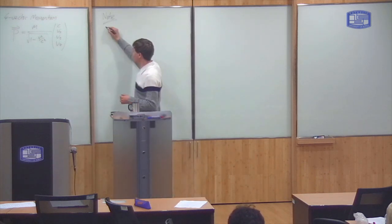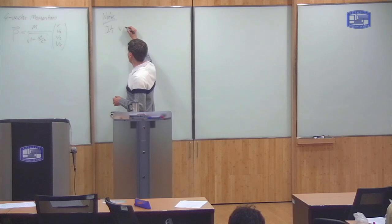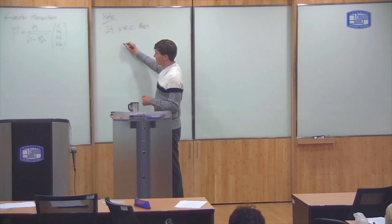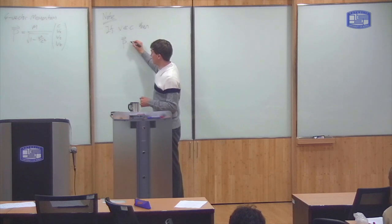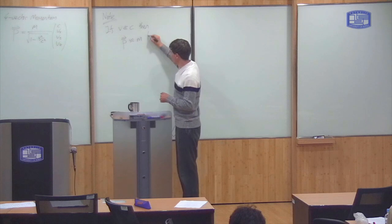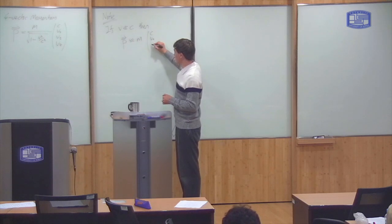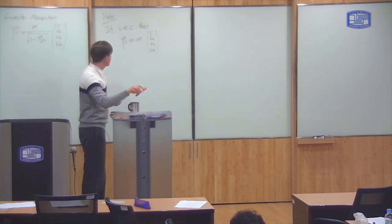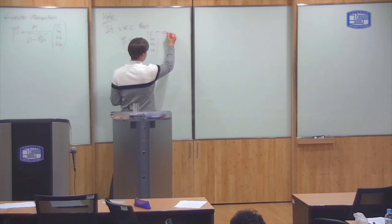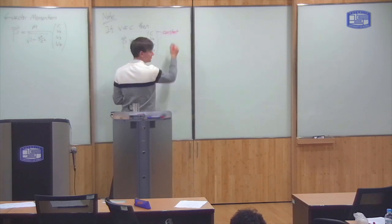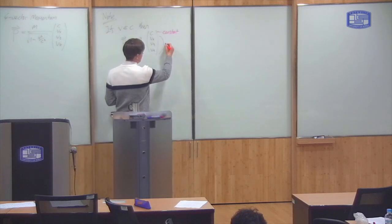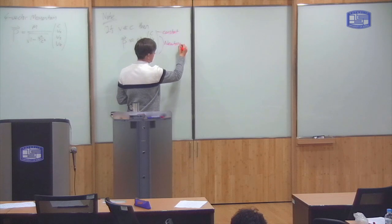So we can check that now. If V is much, much less than C, then you get simply that the four-vector momentum is approximately equal to M times C, Vx, Vy, Vz, in which case the time component is just a constant that doesn't change, and the X, Y, and Z components do indeed give you the Newtonian momentum.